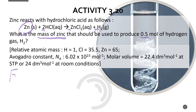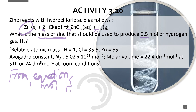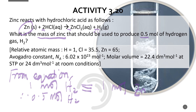From the equation — if the question doesn't give the equation, you must write a balanced chemical equation yourself. From the equation, one mole of hydrogen gas is produced by one mole of zinc. Therefore, 0.5 moles of hydrogen gas means the number of moles of zinc is also 0.5 moles. This step is one mark.